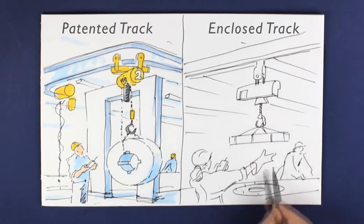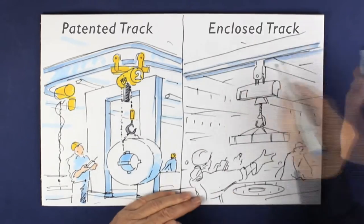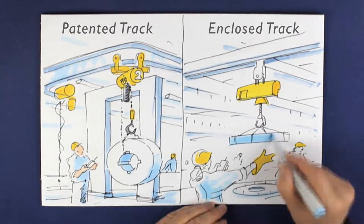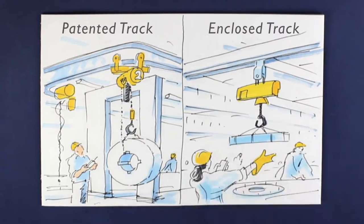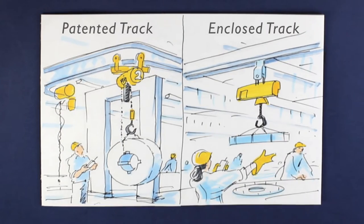An enclosed track system is extremely popular for lifts of less than two tons, and is of particular value where precise positioning of the load is needed.